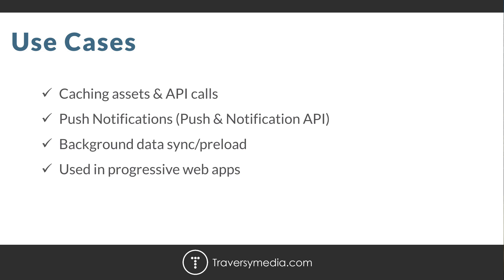There's also background sync, which still isn't fully supported in all browsers. This is a new API that lets you defer actions until the user has a stable connection. For instance, if a user likes a post on a social network, that action needs to be sent to a server, which isn't possible without a connection. But with the background sync API, that action can be deferred — put on hold in the cache — until connectivity is restored, and then that post will get liked. If you've ever used the Instagram mobile app, it works in a very similar way when offline.